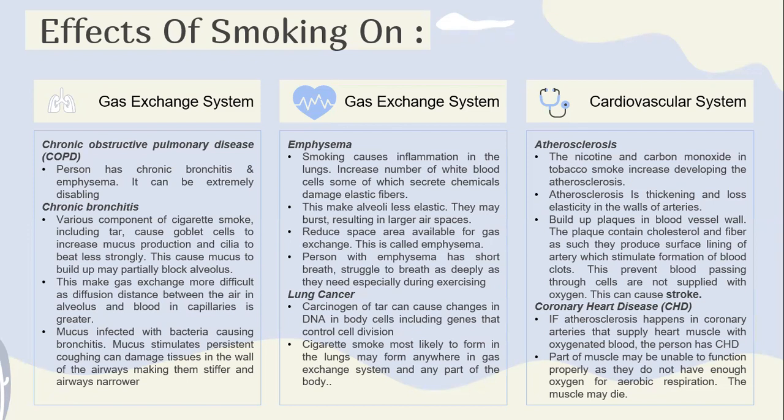The effect of smoking on lung cancer: carcinogens in tar can cause changes in DNA in cells, including genes that control cell division. The cancerous cells that smokers are most likely to form in the lungs may form anywhere in the gas exchange system and any part of the body.